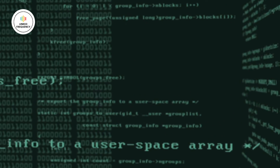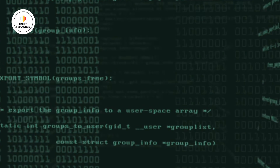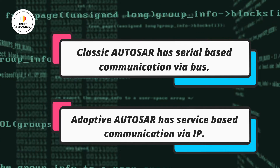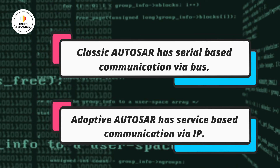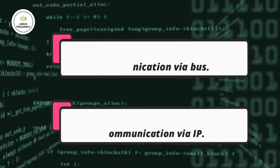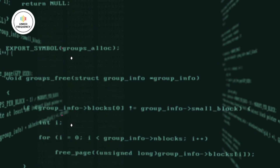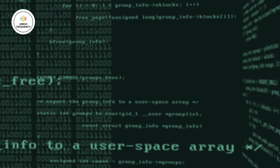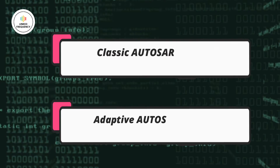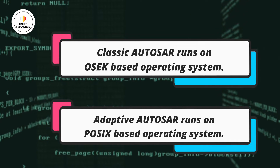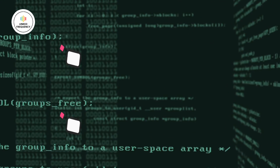The sixth difference is based on communication protocol: in classic AUTOSAR, communication is signal-based and is achieved by communication bus networks such as CAN, LIN, etc. Whereas in adaptive AUTOSAR, it is service-based communication which utilizes Ethernet and SOME/IP as the physical medium. The seventh difference is based on operating systems: classic AUTOSAR runs on an OSEK-based operating system, whereas adaptive AUTOSAR runs on a POSIX-based operating system.